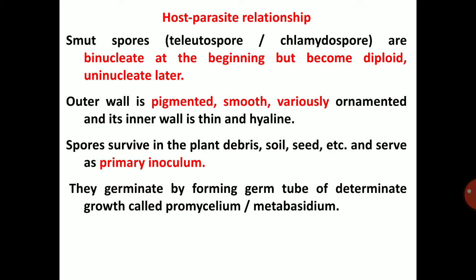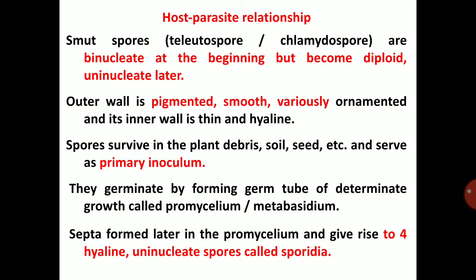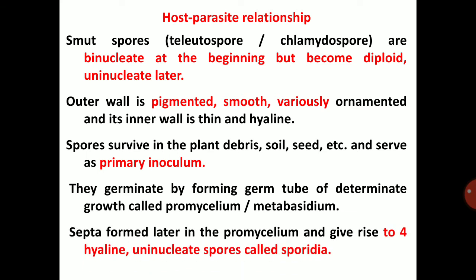They germinate by forming a germ tube of determinate growth called promycelium or metabasidium. It will produce promycelium or metabasidium. Septa are formed later in the promycelium, giving rise to four hyaline uninucleate spores called sporidia. So basidiospores are also called sporidia.